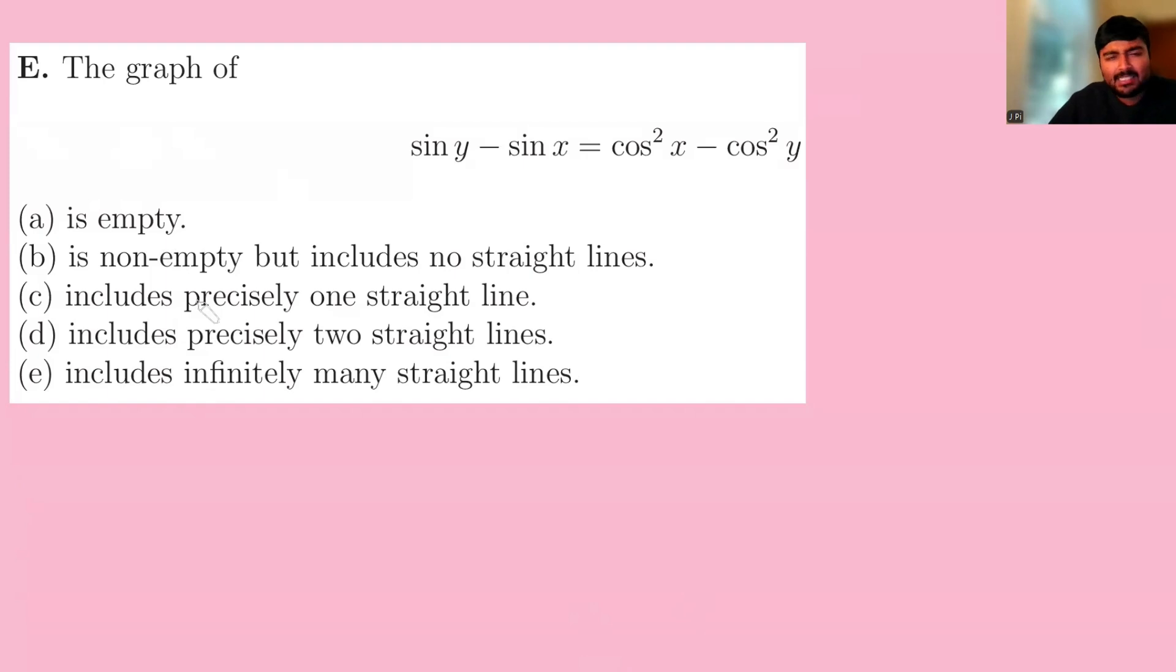Is it empty? Is it non-empty but includes no straight lines? Or does it include precisely one straight line, two straight lines, or infinitely many straight lines?